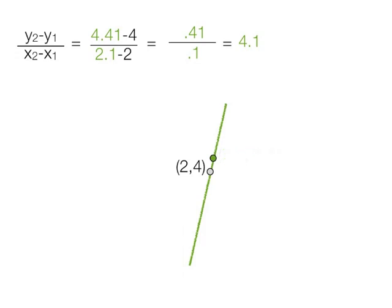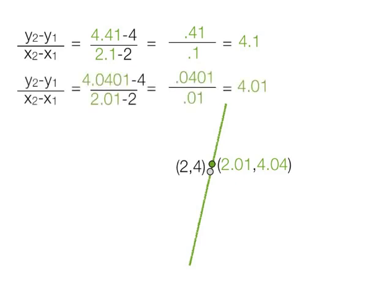Now if that green dot gets closer to the gray dot, let's say now it's 2.01, and then y would be 4.04. Now if you put all the points in, the slope is 4.01. In other words, as these two dots get close together, or the distance between them is almost zero, the slope approaches 4.